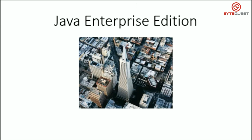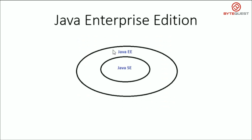The next one is Java EE, which stands for Java Enterprise Edition. Java Enterprise Edition is specifically designed for building large-scale business applications, also known as enterprise applications. As you can see in this diagram, Java Enterprise Edition is built on top of Java Standard Edition. It provides libraries for database access, web services, web applications, messaging, enterprise Java beans, and so on.